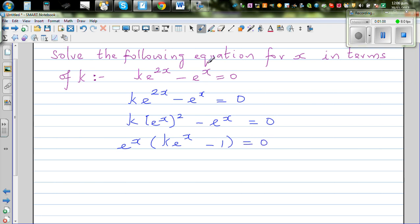This will become a quadratic in quadratic form. So this is k times e to the power x minus 1 equals 0. So this implies you can say e to the power x equals 0, or k times e to the power x minus 1 equals 0.